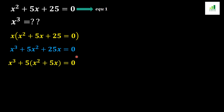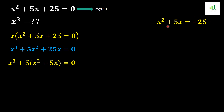In the next step, we take out common factor 5 from 5x squared plus 25x, giving us x cubed plus 5 times the quantity x squared plus 5x equal to 0. From equation 1, we know x squared plus 5x plus 25 equals 0, so x squared plus 5x equals minus 25.